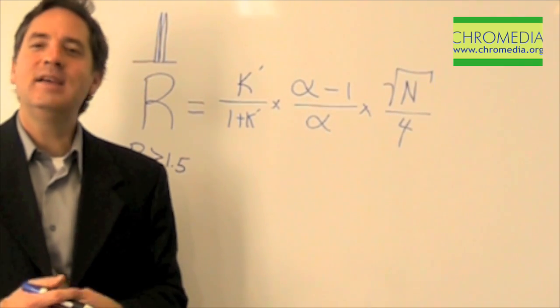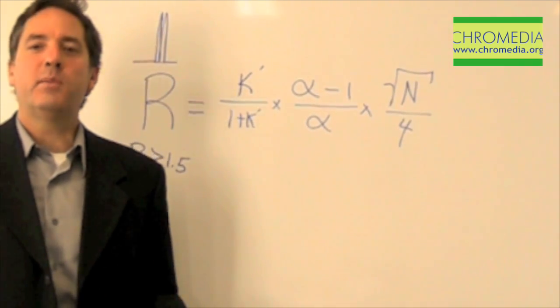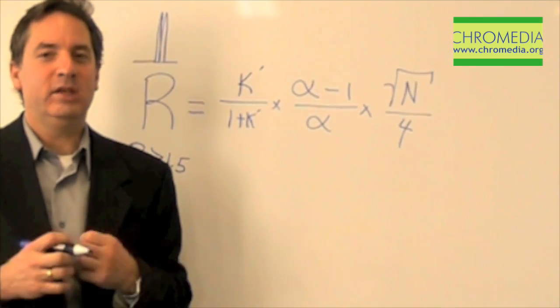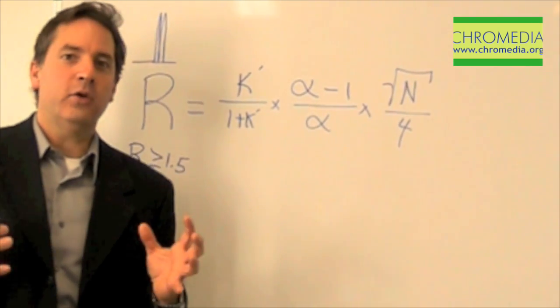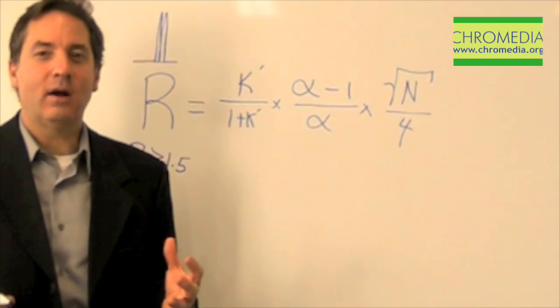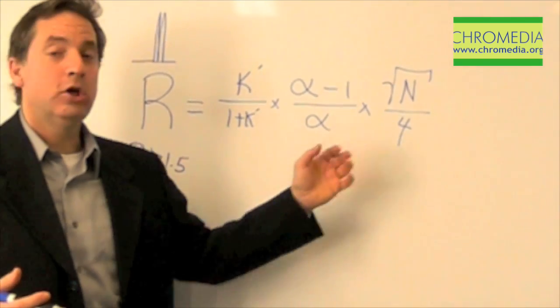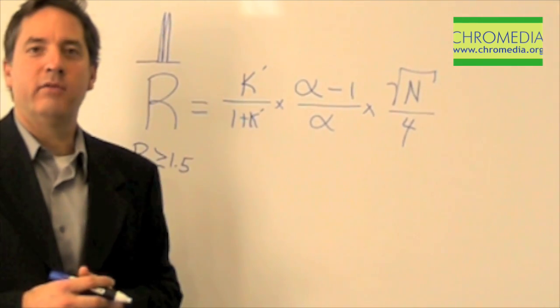Our job, as separation scientists, is to separate, is to resolve our peaks. So we want to have resolution of at least 1.5. So now the question is, how do I get there? How do I set these three terms correctly in order to achieve 1.5 resolution?